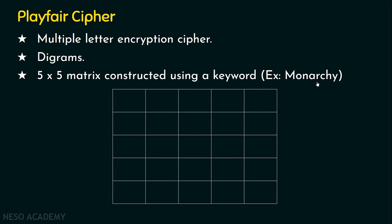We take a 5×5 matrix and fill it with the keyword. In this example, the keyword is Monarchy. Do we have any repeating characters? M, O, N, A, R, C, H, Y — each appears only once. So we fill them in order: M, O, N, A, R, C, H, Y. If a letter repeats in the keyword, fill it only once. After the keyword, we fill remaining alphabets starting from A. A is already there, so we start with B. C is already in the keyword, so we skip it. D is not there, so we fill D, then E, F, G. H is already in the keyword, so we skip it. We fill each remaining letter only once.